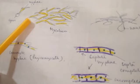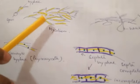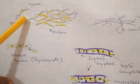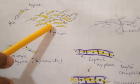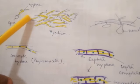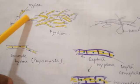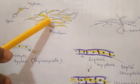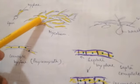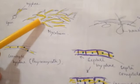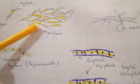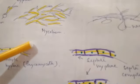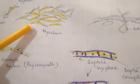Another symbiotic association is mycorrhiza — M-Y-C-O-R-R-H-I-Z-A — which is an association of fungi with the roots of higher plants. The fungi help in absorption of water and minerals, entering fine cracks that roots cannot reach, thereby increasing the surface area for absorption. In return, the roots provide food to the fungi. This association is called mycorrhiza.